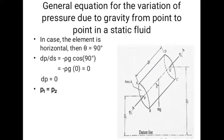In case the element is horizontal, then theta equals 90 degrees. Putting the value of theta equal to 90 degrees, we get minus Rho G times zero, because cos 90 equals zero. Thus Dp equals zero, which means that P1 equals P2.